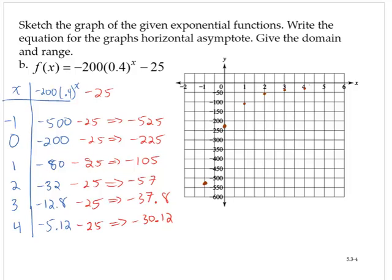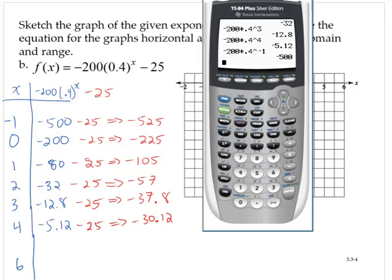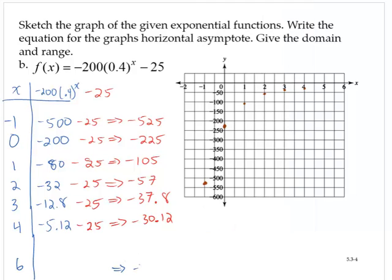What happens here is if we put in a larger number. Let's put in a larger number here. How about six? What happens if x is six? For the entire function, I'd have negative 200 times 0.4 to the sixth, and then I would subtract 25. And notice that that's pretty close to negative 25, negative 25.8 approximately. So I have six, negative 25.8.